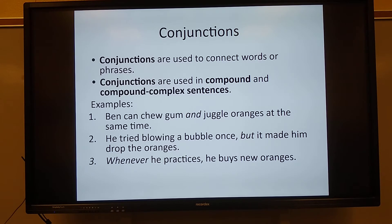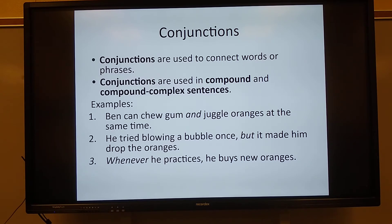For example, number one: Ben can chew gum and juggle oranges at the same time. And is the conjunction. Number two: He tried blowing a bubble once, but it made him drop the oranges. In that compound sentence, but is the conjunction.